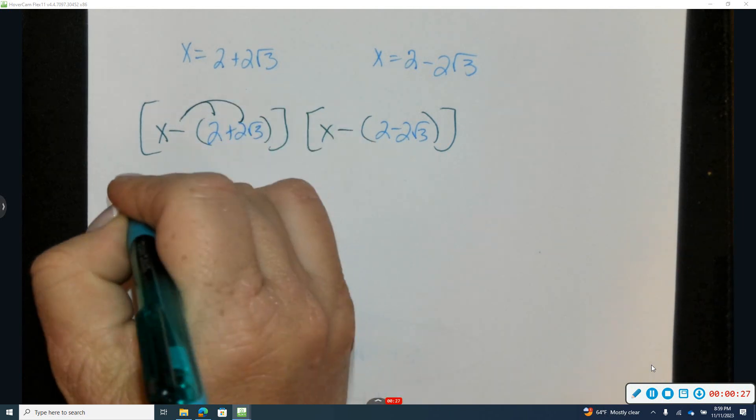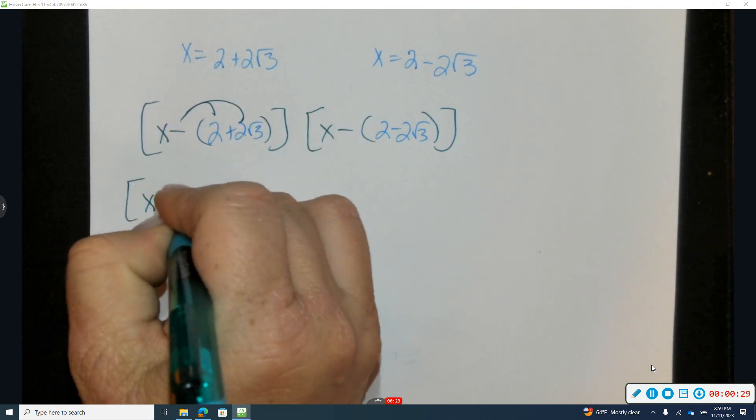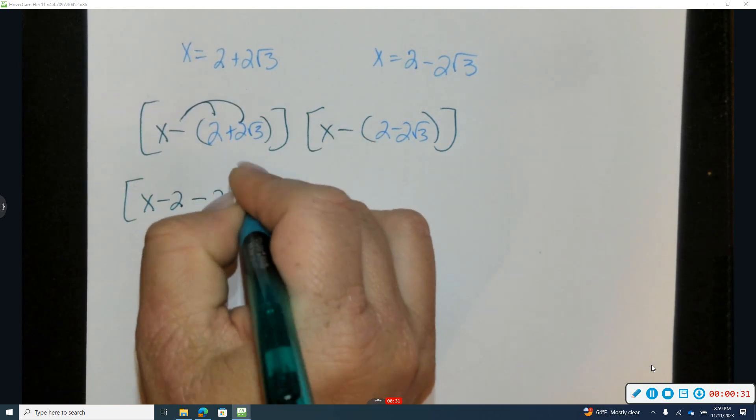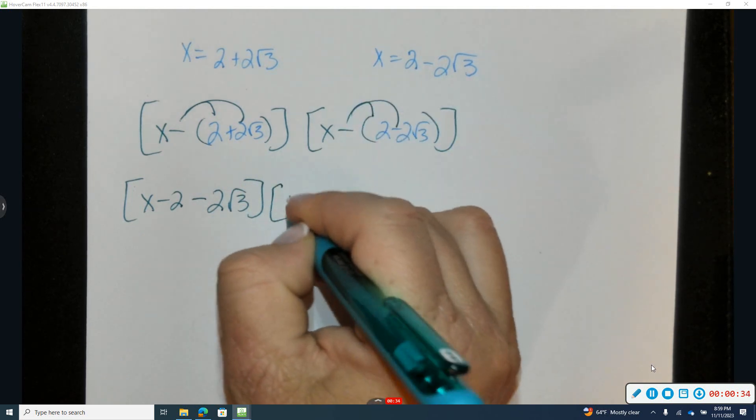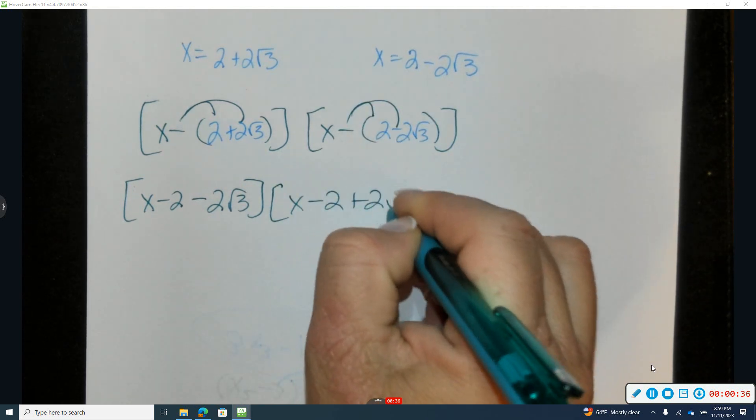And I'm going to distribute the negative to have x subtract 2 subtract 2 square root of 3, and do the same with the second, subtract 2 plus 2 square root of 3.